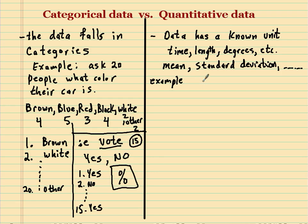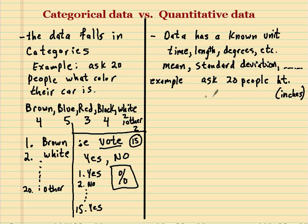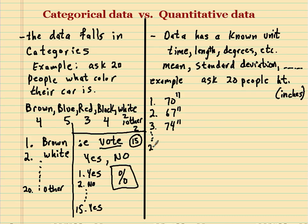Let's do an example: we're going to ask 20 people how tall they are, with the unit being inches. The first person might say 70 inches, the second person 67 inches, the third person might be a little taller at 74 inches — that's 6'2". And so on until the 20th person, who might say 66 inches.